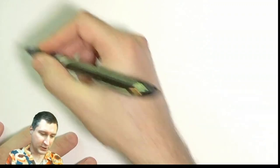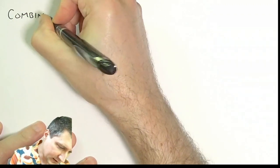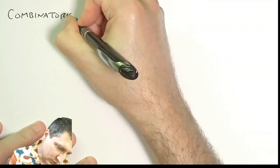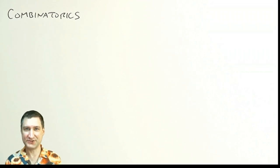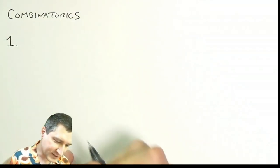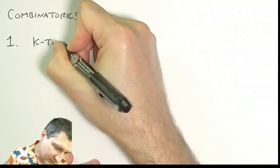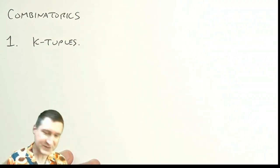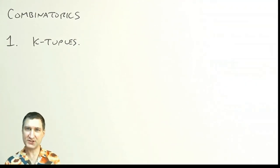Today we're going to talk about combinatorics, which is basically a fancy word for talking about how many ways we can rearrange or count certain objects. There are a few cases that come up all the time in probability. The first one is called k-tuples, and the idea here is that I have k slots and a certain number of choices for each slot.